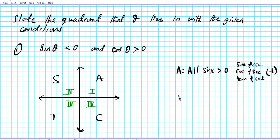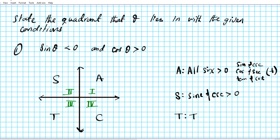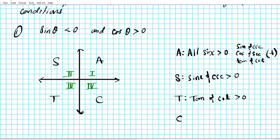S means sine and its reciprocal cosecant are positive; everything else is negative. T represents tangent and its reciprocal cotangent — tangent and cotangent are positive, everything else is negative. C means cosine and its reciprocal secant are positive; everything else is negative.